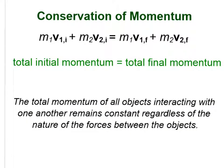And this is the law of conservation of momentum. It is that the total initial momentum will equal the total final momentum. We can write that in the case of these balls as: mass of the first ball times the initial velocity of the first ball, plus the mass of the second ball times the initial velocity of the second ball. Another way to state that would be that the total momentum of all objects interacting with one another remains constant regardless of the nature of the forces between the objects.